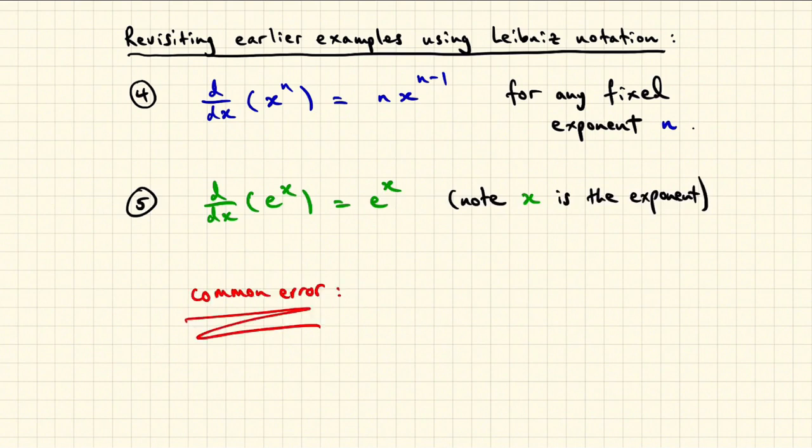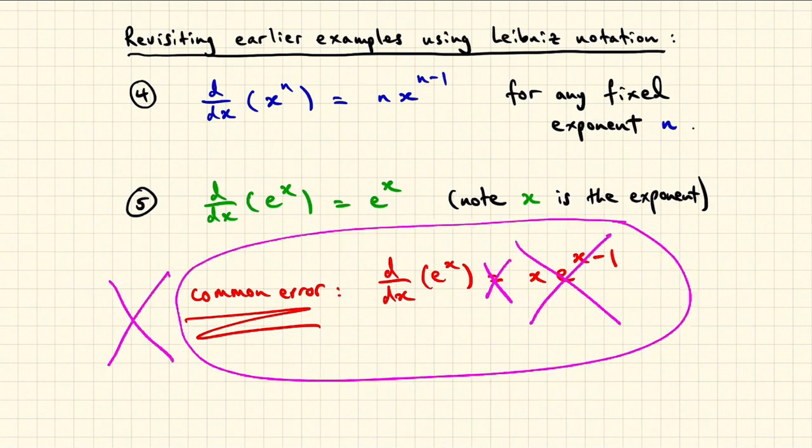It's a common error by students to confuse the exponential rule for differentiation with the previous rule, and guess that the answer for the derivative of e to the x should be the result of bringing the exponent x down to the front, and then creating a new exponent by subtracting 1, which is completely wrong and off track. This is a subtle error, and the result of confusing the contrasting roles of the variable x used in building power functions, where x is a base, and exponential functions, where x is an exponent.